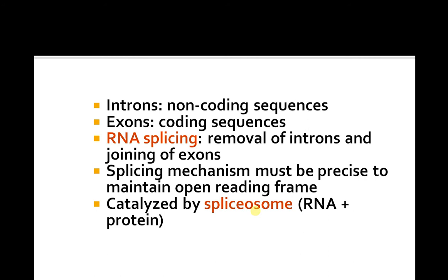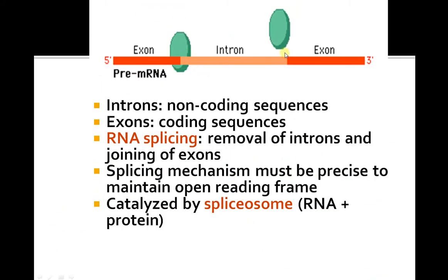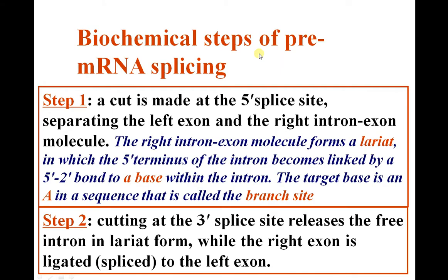The splicing mechanism must be precise to maintain the open reading frame, and is catalyzed by spliceosomes of snRNA plus proteins. Biochemical steps of pre-mRNA splicing: Step 1 is a cut made at the 5' splice site, separating the left exon. The right intron-exon molecule forms a lariat, in which the 5' end of the intron becomes linked by a 2' to 5' bond to a base within the intron at a sequence called the branch site.